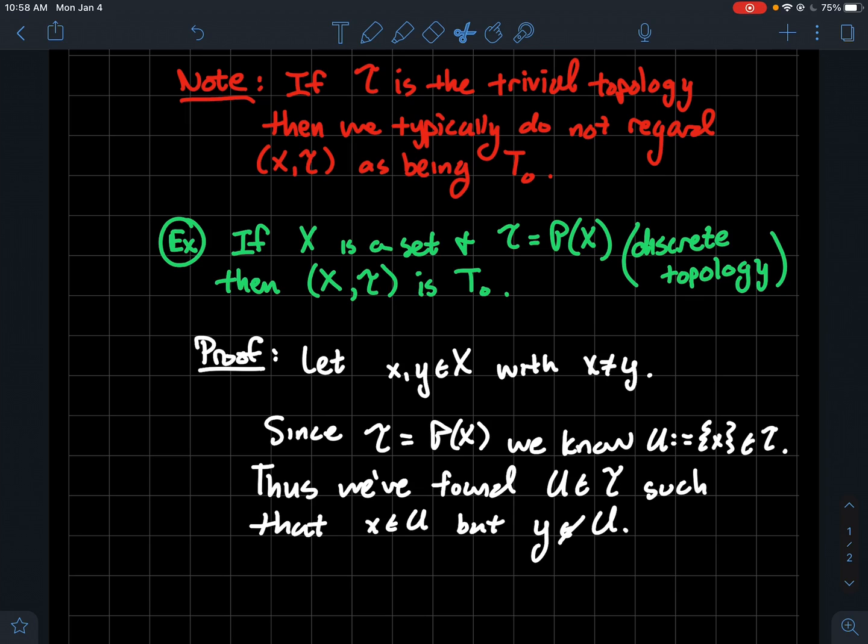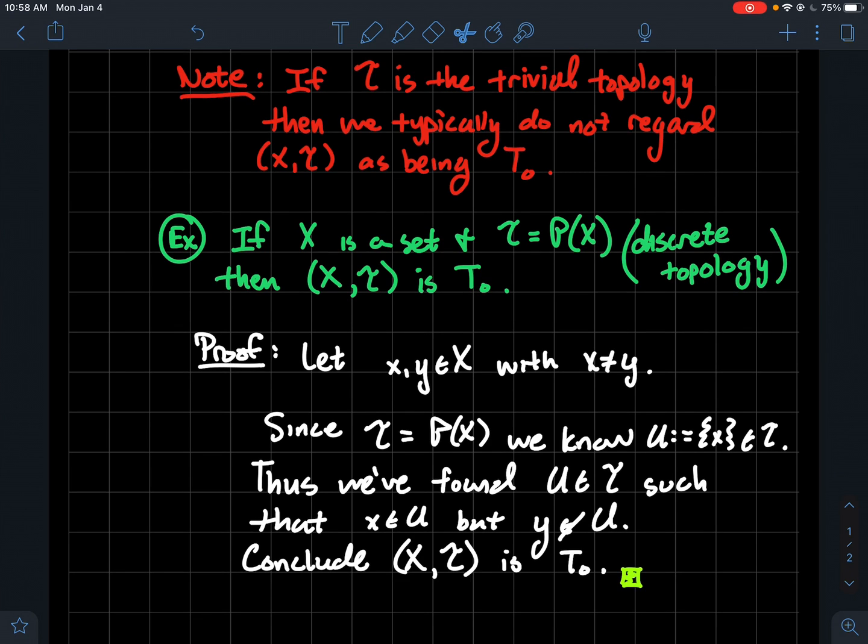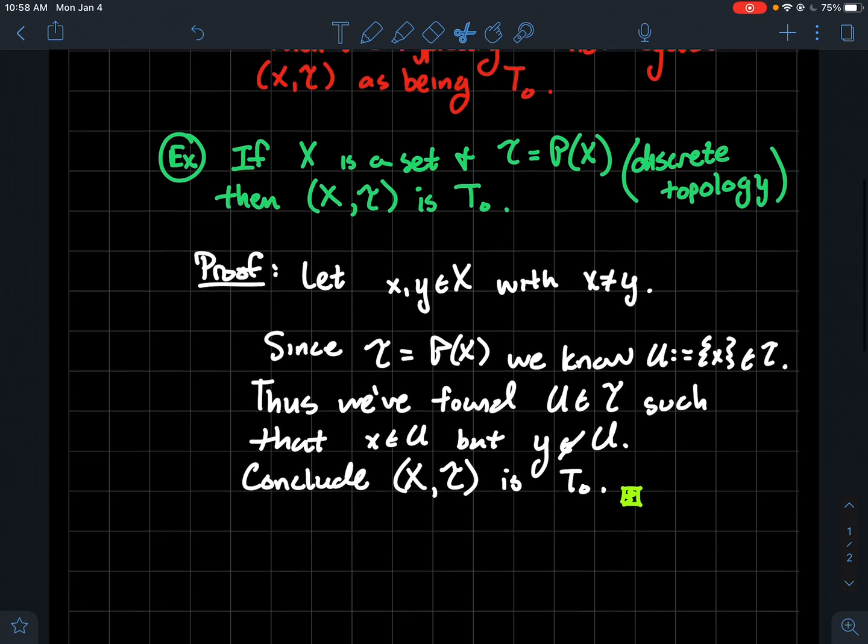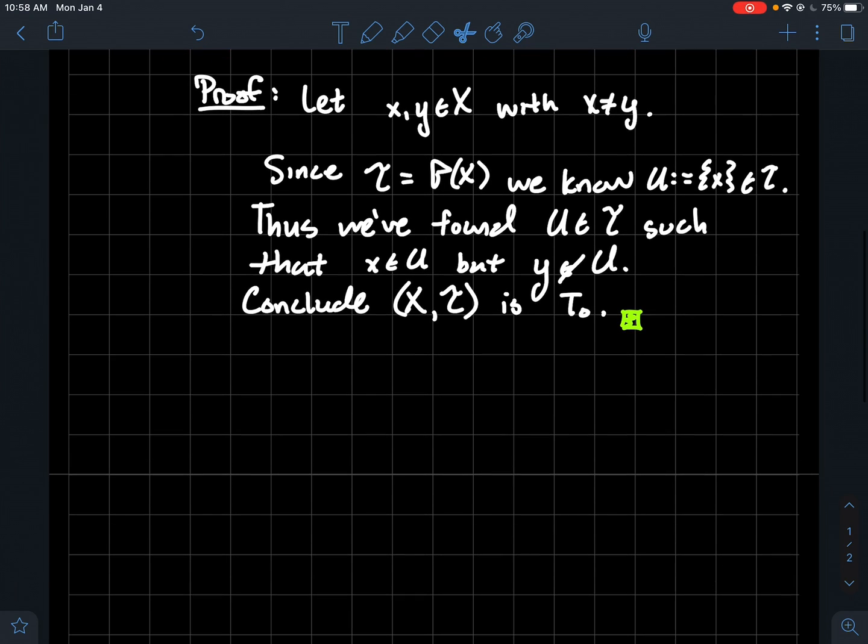So the discrete topology on a set is again kind of an extreme example, an extremely easy example of a set that's T₀. So again conclude that X with the discrete topology is a T₀ space.